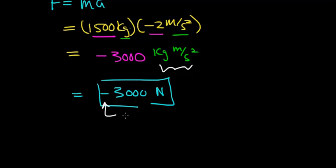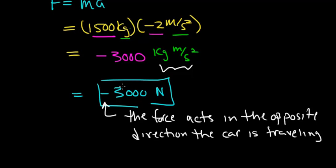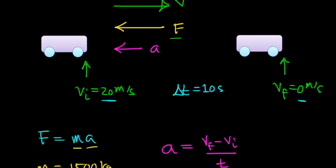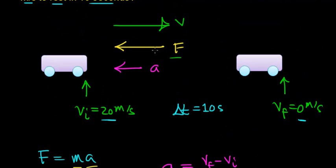The negative sign indicates that the force needs to be applied in the opposite direction that the car is initially traveling. Going back to our picture, notice that the force is acting in the opposite direction that the car is initially traveling, so the force is pointing in the negative direction, whereas the velocity is going in the positive direction.